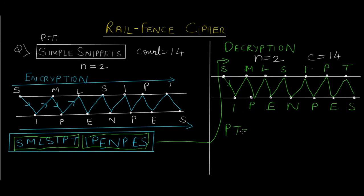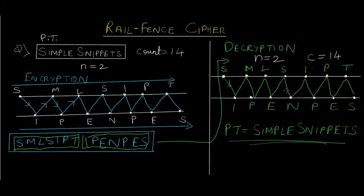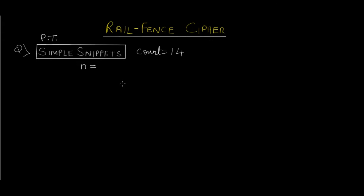Reading back in the zigzag format gives us S, I, M, P, L, E, S, N, I, P, P, E, T, S — which is 'simple snippets', our plain text. That was the case for n equals two. Now let's see what happens when we have three rails, keeping the same plain text 'simple snippets' with count 14 but n equals three.